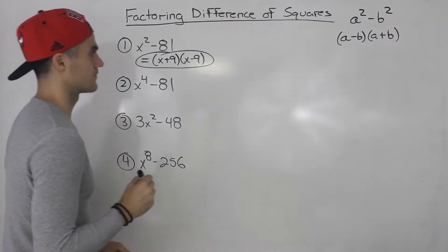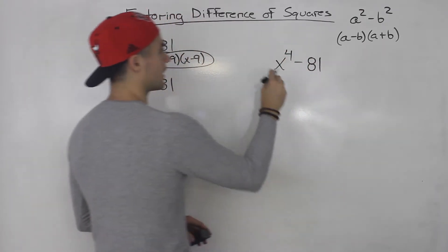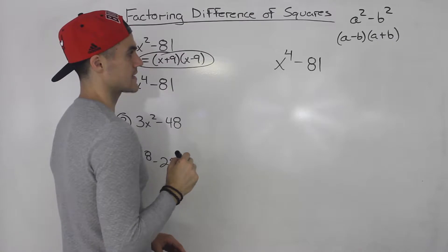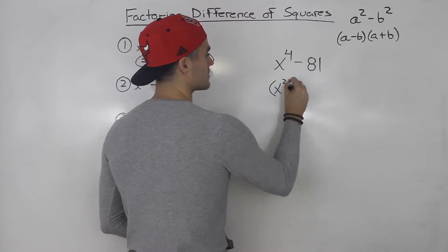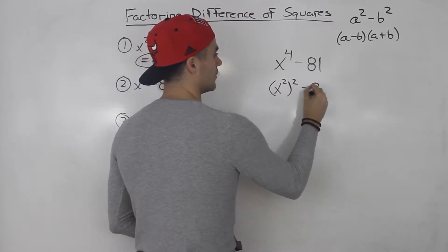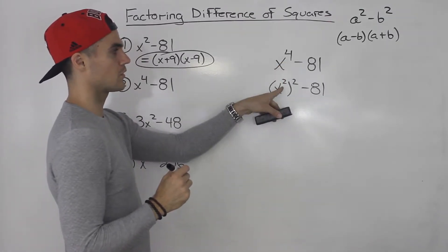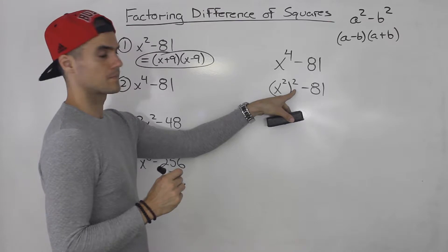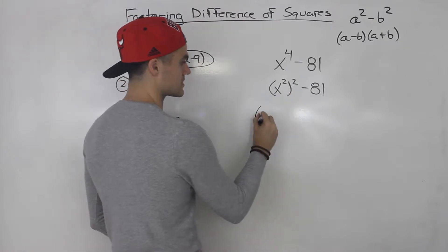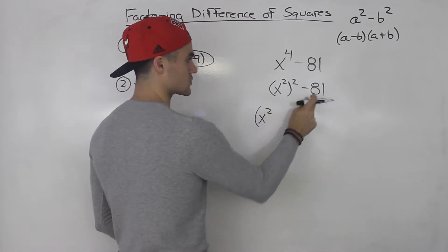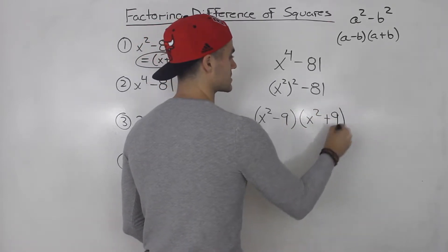Number two is a little more complex. We've got x to the power of four minus 81. Now x to the power of four, we can rewrite as x squared to the power of two, minus 81. So we took x to the power of four and rewrote it as x squared squared. And now notice that that's a difference of squares. The square root of this is just x squared, and the square root of 81 is nine. So we get x squared minus nine times x squared plus nine.